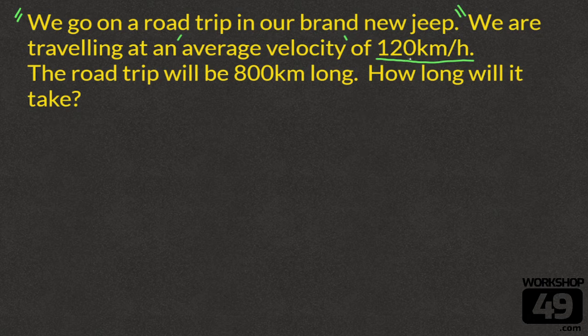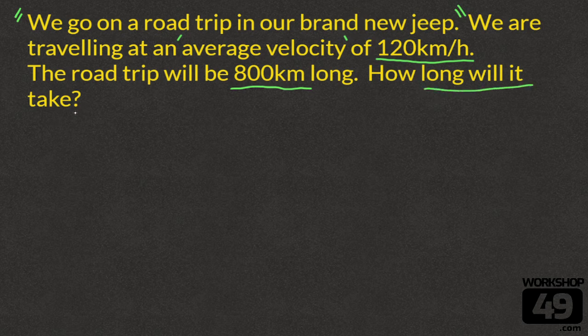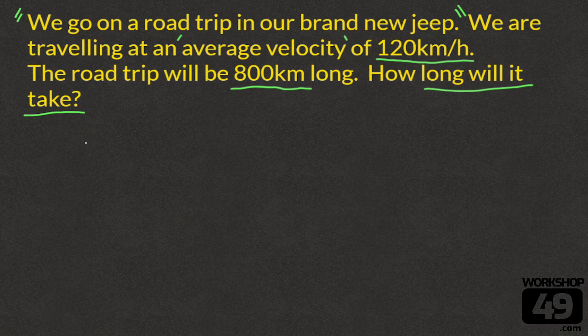We are traveling at an average velocity of 120 kilometers per hour. Watch for that word average velocity or constant velocity. That's how you know you're using this equation v equals d over t. Our velocity is 120 kilometers per hour. The road trip will be 800 kilometers long, that's a distance. The question is how long will it take? That's our time. We need to solve our time in this case.